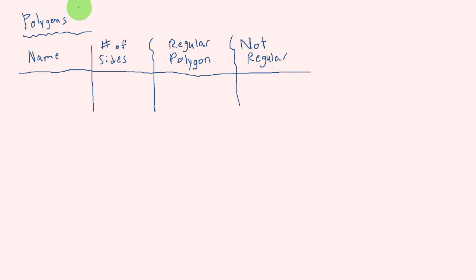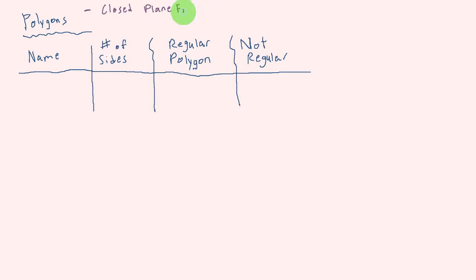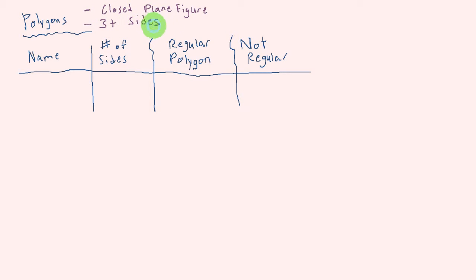So let's go ahead and start looking at what a polygon actually is. There are two things that make a polygon a polygon: it is a closed plane figure, and it has three or more sides. That's what makes up a polygon.